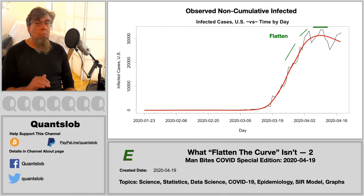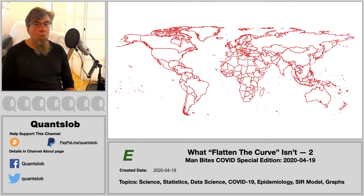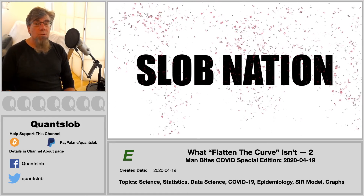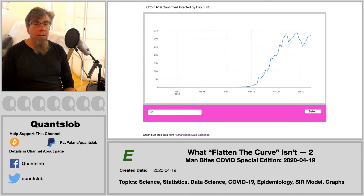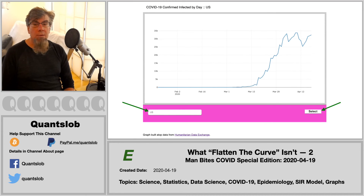Now, very importantly, we've been looking at numbers for the U.S. for the sake of example, but of course, as we all know, the slob nation has no borders. In this video description you will find a link to a web widget — nothing fancy or flashy, but it should get the job done. Whatever your home country or the country of your friends and loved ones, you can filter the data and look for the flattening pattern.